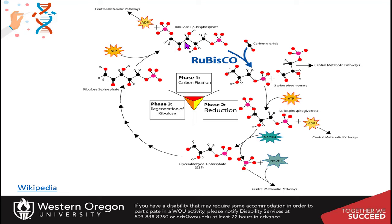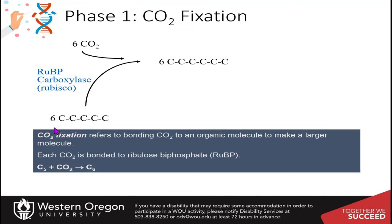Once you regenerate the ribulose 1,5-bisphosphate, you can repeat the cycle. Looking at our carbon numbers, phase one is our carbon fixation. To create one molecule of glucose, we're going to need to incorporate six carbon dioxides into six molecules of ribulose 1,5-bisphosphate to create a single glucose molecule.